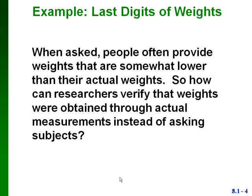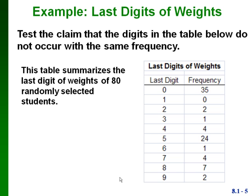Here's an example. If someone asks you your weight you may give them a number that's slightly lower than your actual weight, and you're likely to round it — so you wouldn't say 128 pounds, you might say 130 or 125 pounds. So if we have a sample that includes some weights, how would we know whether they were actually obtained through measuring the weight or just by asking subjects what their weight was? We're going to take data from the weights of 80 randomly selected students and see whether those weights were actually measured or just reported.